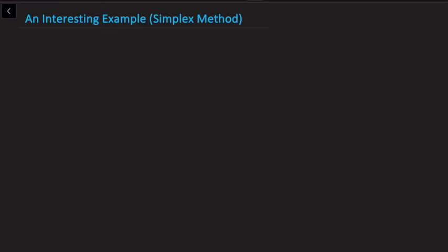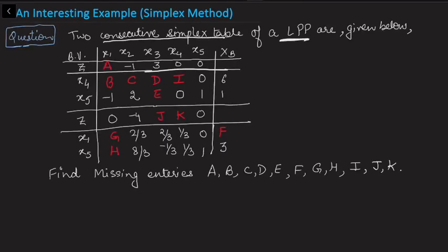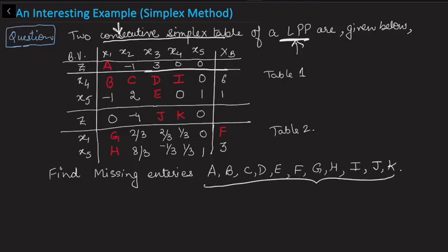In this video I'm going to cover a very interesting example which is based on the simplex method, but not the usual simplex method where we solve a given linear programming problem. In this problem, two consecutive simplex tables of a linear programming problem are given to us, and we don't have the original LPP. We only have these two consecutive simplex tables, and from just that information I need to find the missing entries a to k.